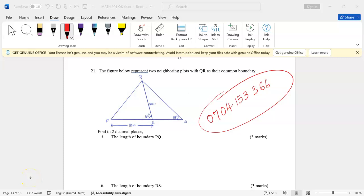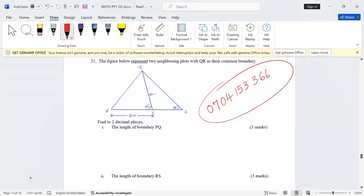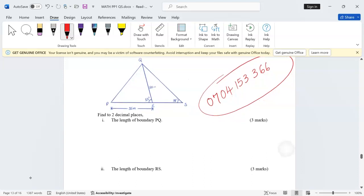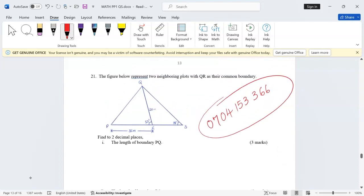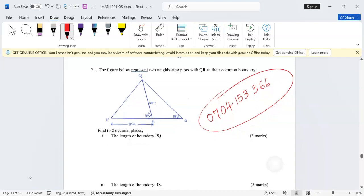Thank you for joining this lesson. We're going to look at the solution of triangles, that is the application of cosine rule and sine rule. Remember to subscribe to this channel and also share the link with friends. Number 21: The figure below represents two neighboring plots with QR as their common boundary.